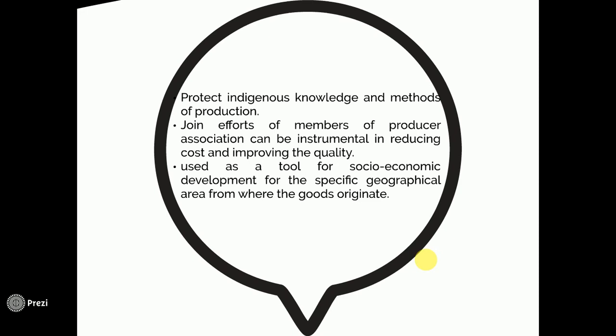Joint efforts of members of a producer association can be instrumental in reducing cost and improving quality. This means if a large number of producers come together and form an association, it will help in reducing costs because everybody will be putting in their own skills, finance, and sometimes techniques as well, which will also help in improving quality. GIs are also used as a tool for socioeconomic development for the specific geographical area from where the goods originate, as that area will be visited by other producers and people from different parts of the country and sometimes even from outside.